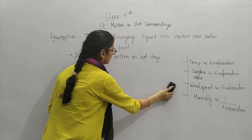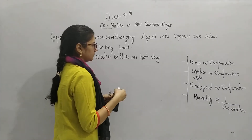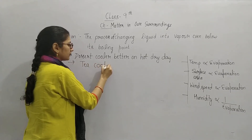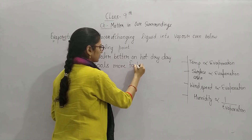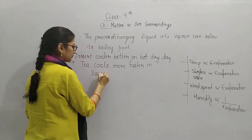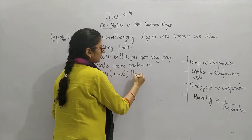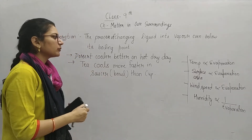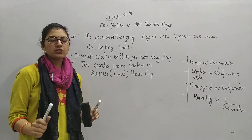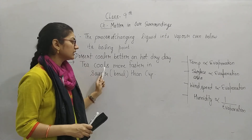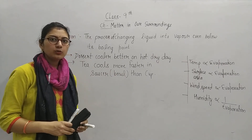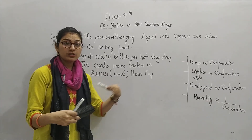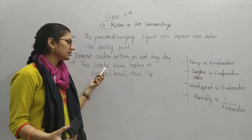एक और example लेते हैं — tea cools faster in saucer than in cup. अभी दोनों mix कर रहे हैं — जो factors पढ़े थे और जो हमने पढ़ा कि evaporation cooling provide करता है. तो जो हमारी चाय है वो जल्दी ठंडी हो रही है saucer में, क्योंकि saucer का surface area ज़्यादा है. Surface area बढ़ेगा तो evaporation process और जल्दी होगा, और जितना जल्दी evaporation होगा उतनी जल्दी ठंडी हो जाएगी.